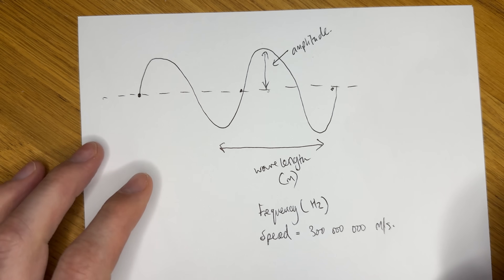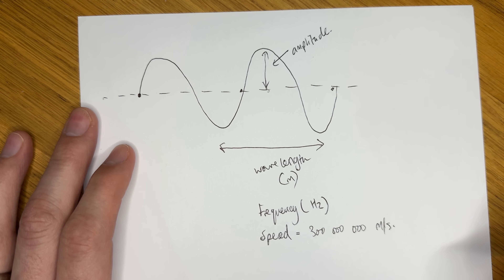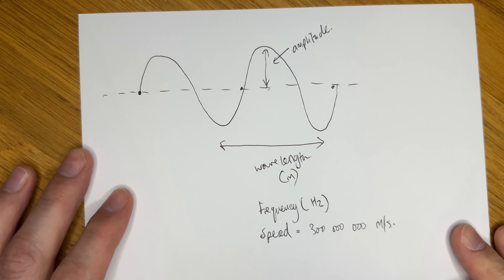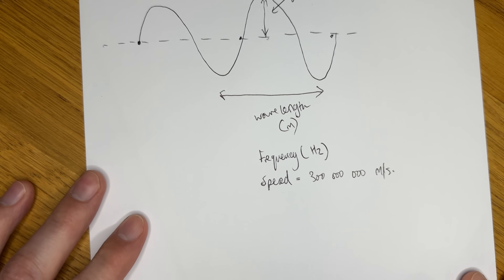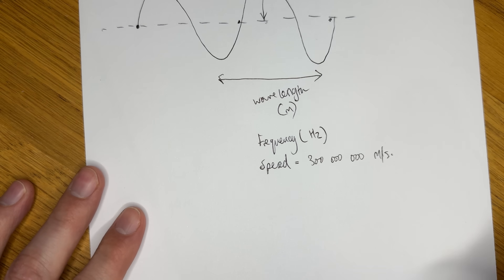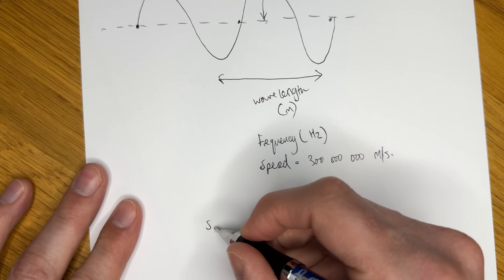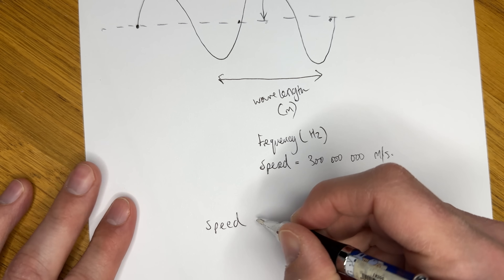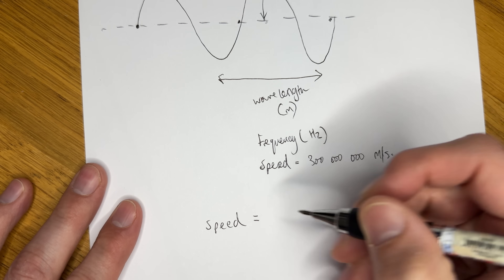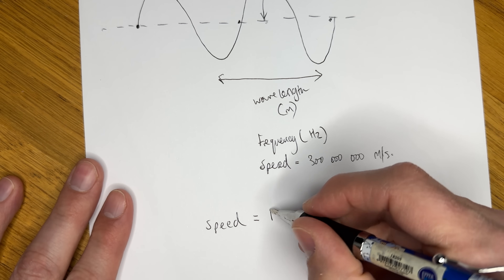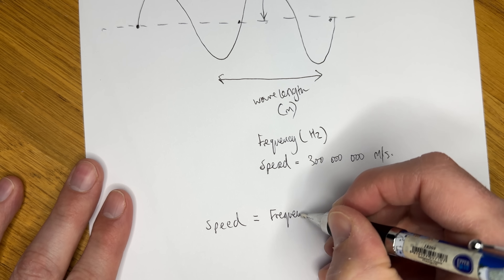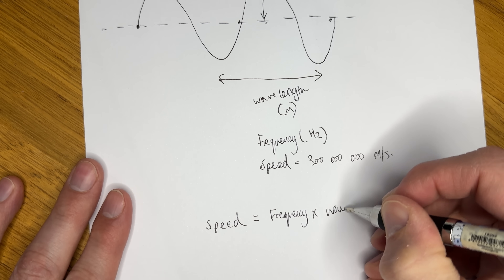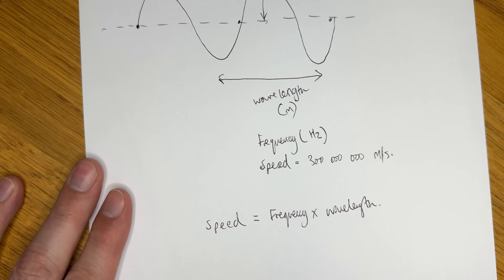But here on Earth's surface, in air, it is around 80,000 metres per second slower than that — which, in the grand scheme of things, is nothing. And there's a nice relationship between a wave's speed, its wavelength, and its frequency. A wave speed is its frequency multiplied by its wavelength, and we can use that formula to work out the speed of light. But for that, we need our microwave oven.